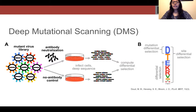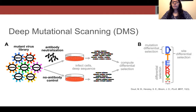Deep mutational scanning is a new approach for identifying these mutations. In this method, a viral library with all possible amino acid mutations is created. The library is then used to infect cells where the protein of interest can be selected for, such as in the presence of antibodies. Sequencing viruses within each environment provides the frequency of each mutation, and the impact of mutations on protein function can be quantified as its differential selection, which is the change in frequency of a variant between the selection and stock mock environments. We can visualize this in sequence logo plots where the letters represent different mutations and the height of each mutation is proportional to its differential selection.